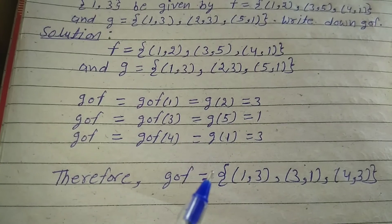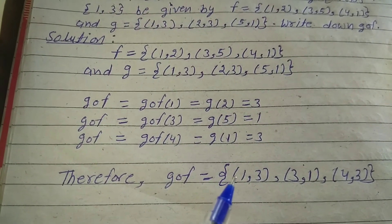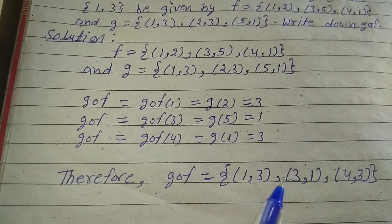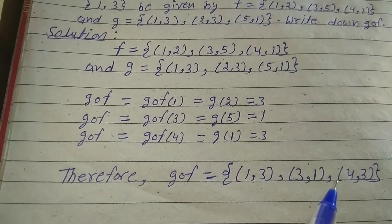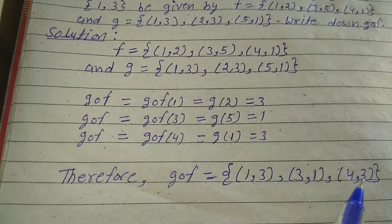Therefore, GoF = {(1,3), (3,1), (4,3)}. This is the answer.